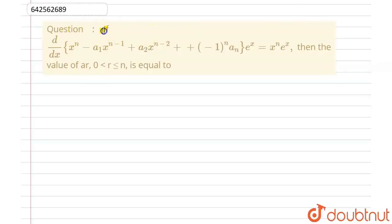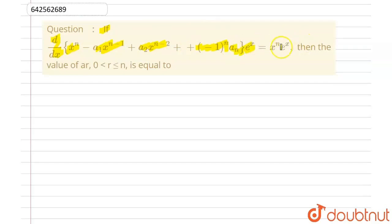The question says that if d/dx of (x^n − a1·x^(n−1) + a2·x^(n−2) + ... + (−1)^n · a_n) · e^x equals x^n · e^x, then find the value of a_r where r lies between 0 to n.